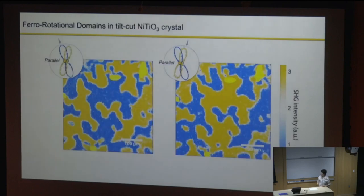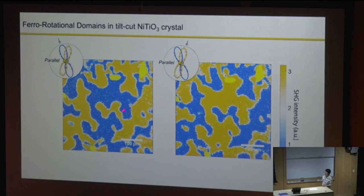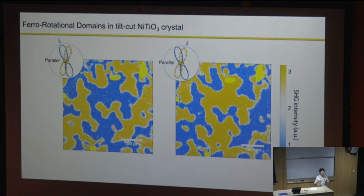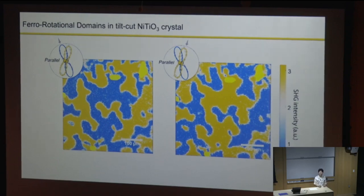We measured for this ferrorotational compound with a raster-scanned tiny beam and indeed can now see domain structures. The two cases highlight one domain versus the other—they are complementary to each other. This is another recent progress: we can now see individual domains.